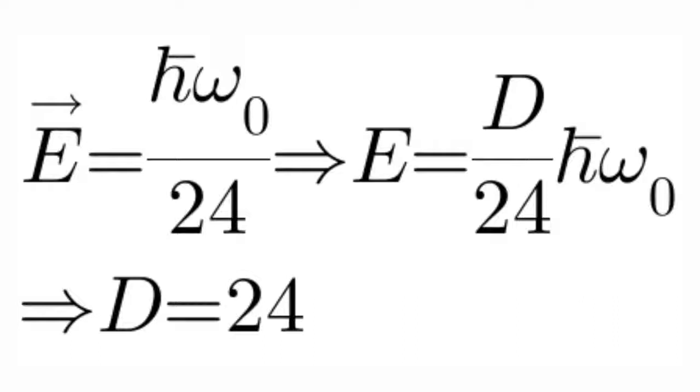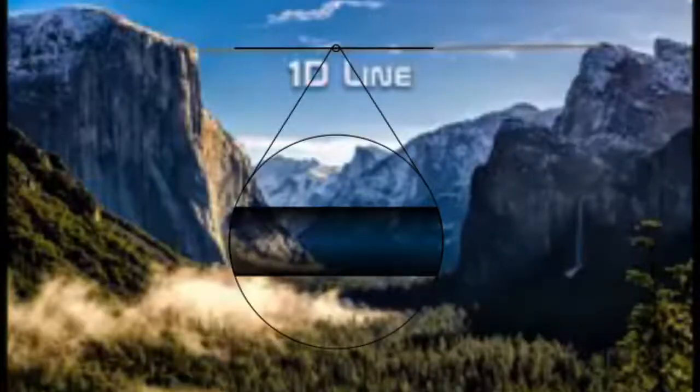So d by 24 should be 1, or d is equal to 24. Now for the vibration especially of strings, we need 24 extra dimensions.